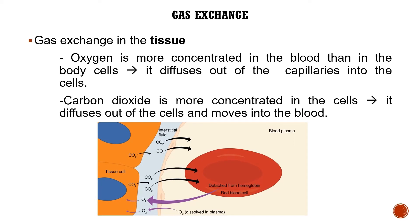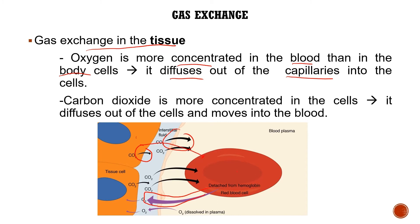For gas exchange in the tissues, oxygen is more concentrated in the blood than in the body cells. This concentration gradient causes oxygen to diffuse out of the capillaries into the cells — indicated by the purple arrow. Carbon dioxide, more concentrated in the cells, moves out of the cell and into the blood — indicated by the black arrow — to be transported back to the lungs and excreted.